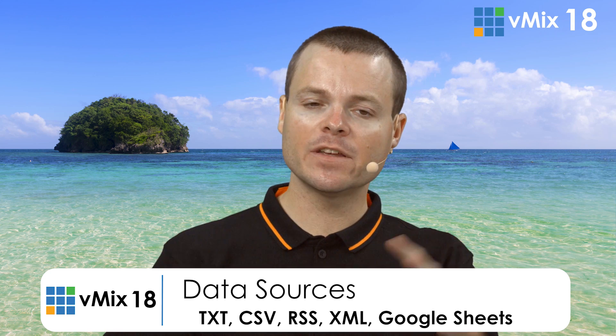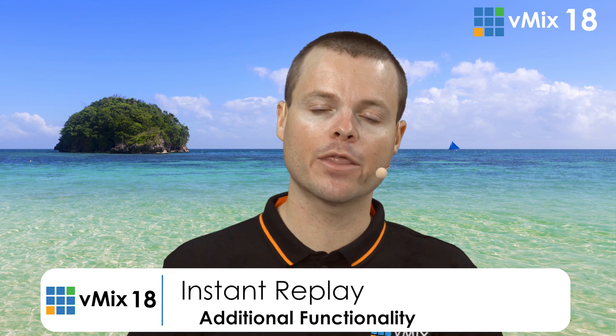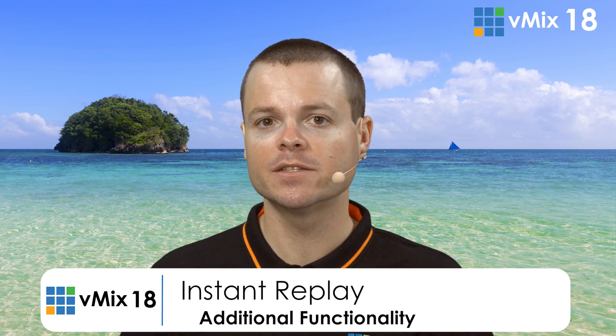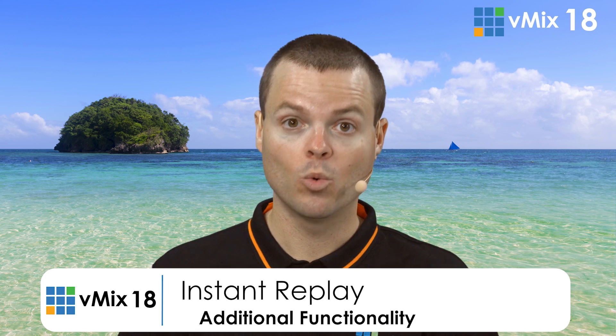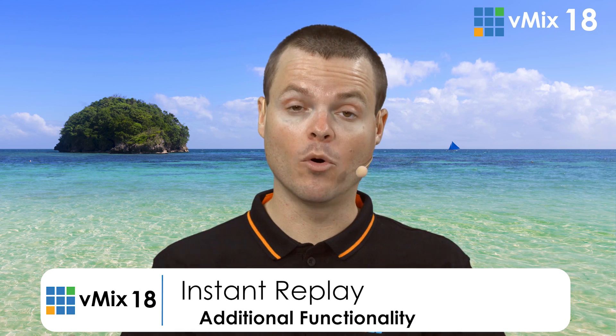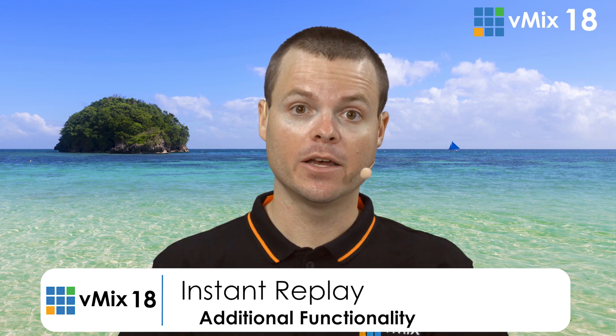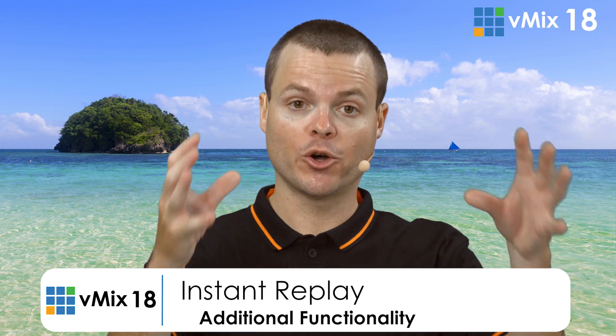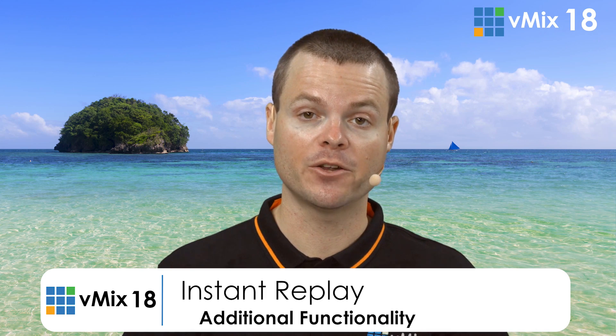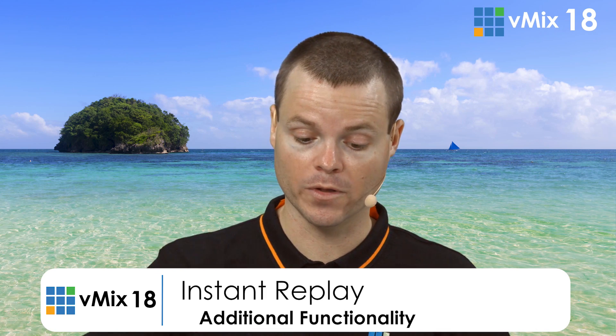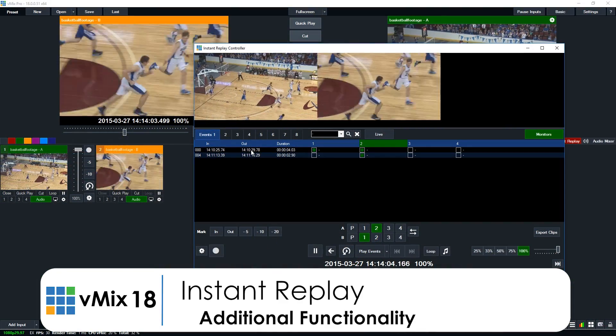Next in vMix 18 is some fine-tuning features in instant replay. Now you can assign three-digit numbers to replay events and play events by ID. When you play back more than one event, you can show the total duration on screen, so you know how much time is remaining across all the events you've queued up for playback.